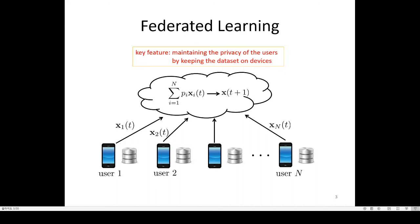The global model is updated by the mobile users through an iterative process. At each iteration, the server sends the current version of the global model to users, and users locally perform model updates. Each user sends the local models to the server, and the server aggregates the models to update the global model for the next iteration.